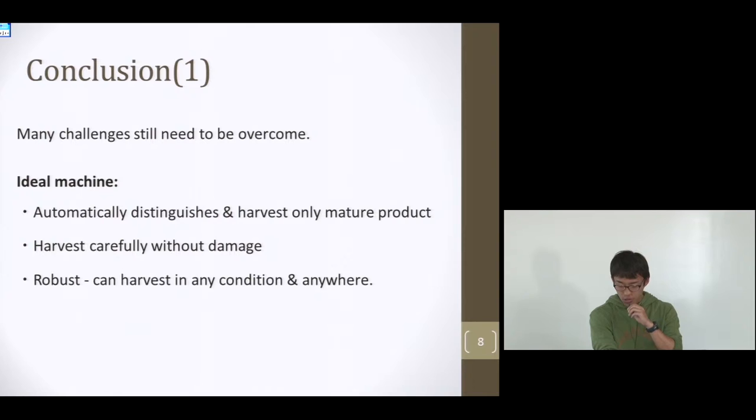I think the most ideal harvester has these three elements: auto-selective skill, which enables to harvest only mature products; non-damage skill, which enables us to use fresh fruit products; and versatility skills. We want to use machines in any condition and anywhere else we want to.